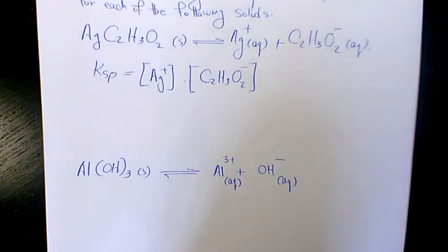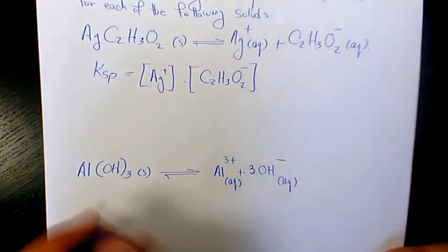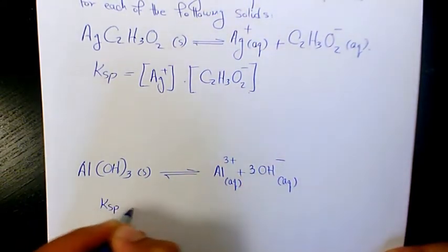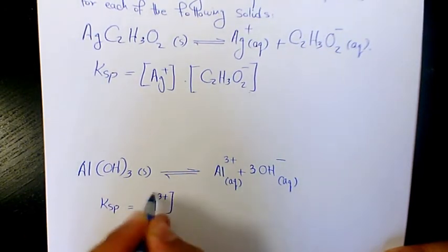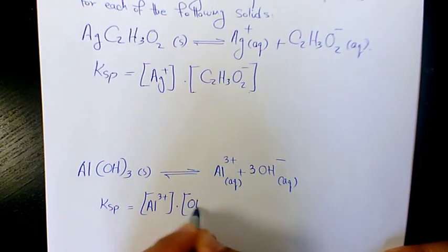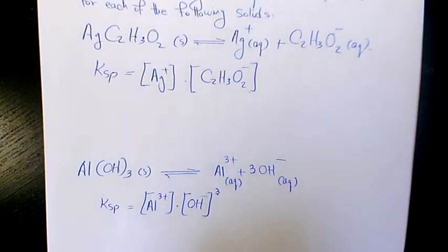Then we balance it. We put in 3 here. Now it's balanced. Ksp now is [Al3+] times [OH-] to the power of 3. So that's going to be the expression for aluminum hydroxide.